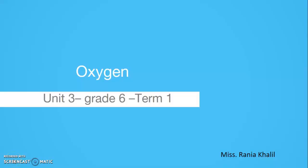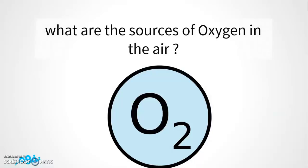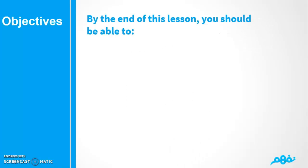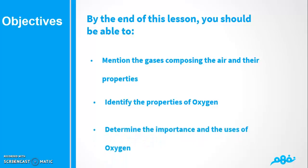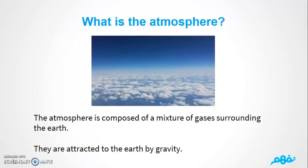Hello and welcome, dear students. Today we're going to work on Unit 3, Lesson 1, which is about oxygen. This lesson is designed for Grade 6. By the end of this lesson, you should be able to: number one, mention the gases composing the air and their properties; number two, identify the properties of oxygen; number three, determine the importance and usages of oxygen gas.